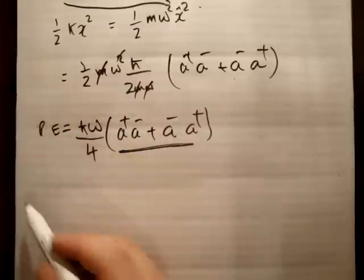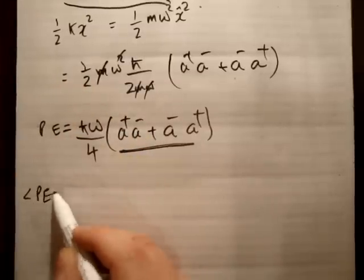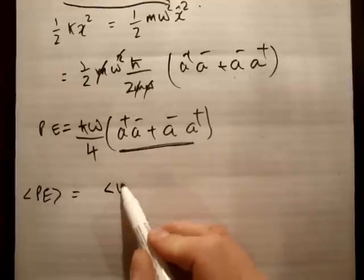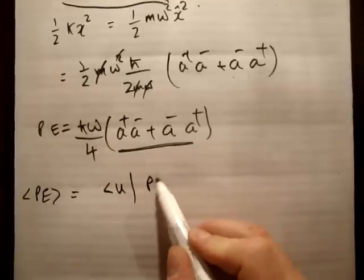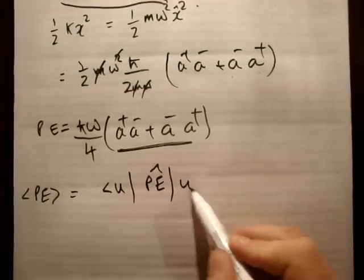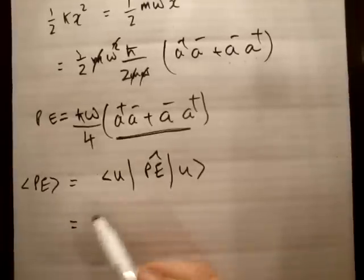So if you want to get the expectation value of potential energy, we need to put that into an integral. So we need the integral to be u, and we'll say the potential energy operator like this, and u, like that.